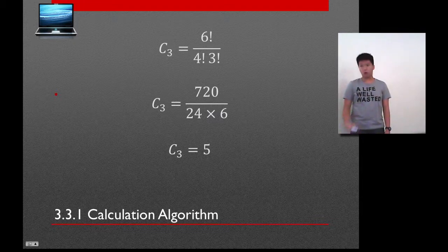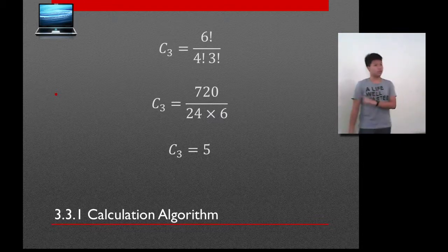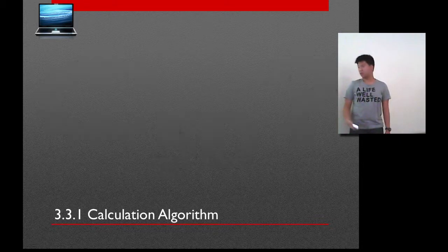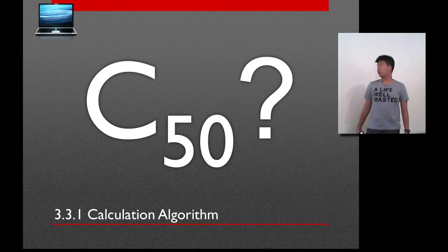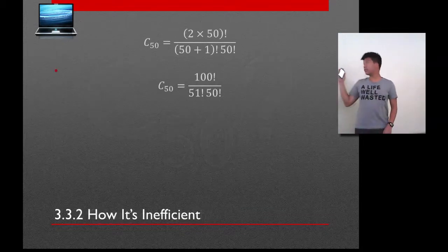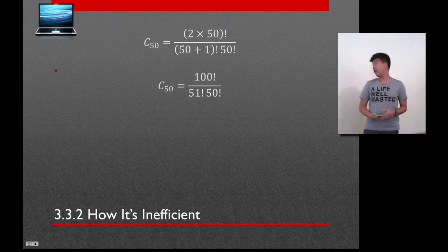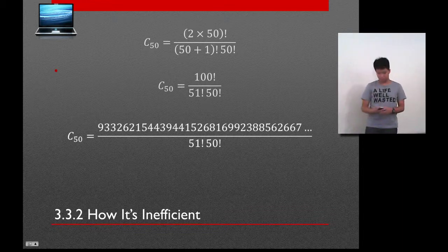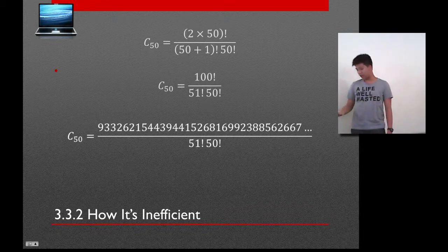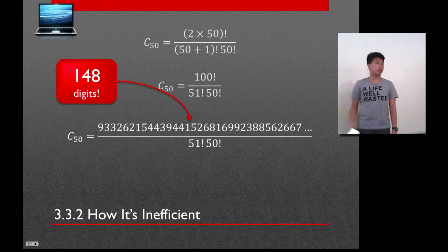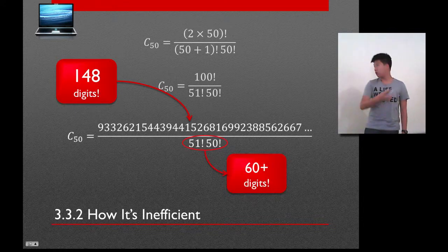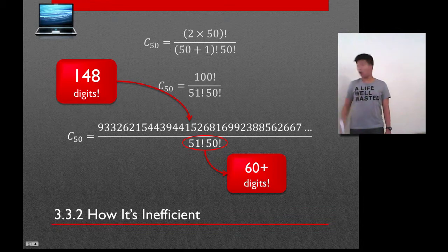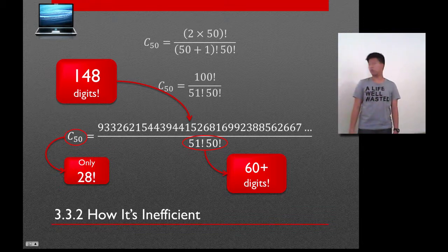But how about we try to calculate the 50th Catalan number? It's interesting. So, let's try that. Here is the equation, 100 factorial, which we wanted to calculate, and it results in this. Shocking. It has so many digits. In fact, it has 148 digits on that. And when we try to calculate the 51 factorial and 50 factorial also, we will get 60 plus digits. All of this, just to find the 50th Catalan number, which only has 28 digits alone. It's wasteful. We don't need that.